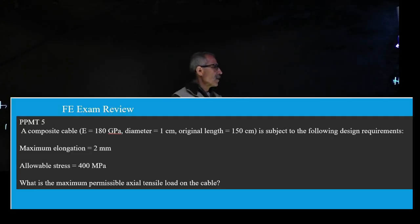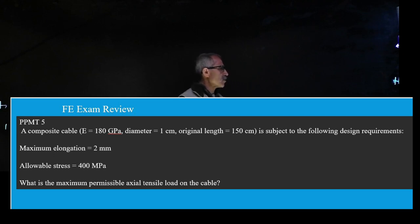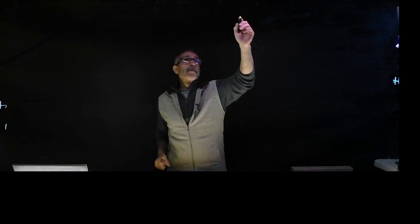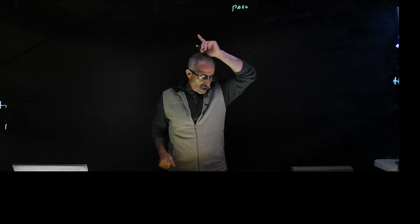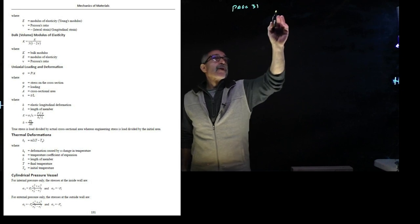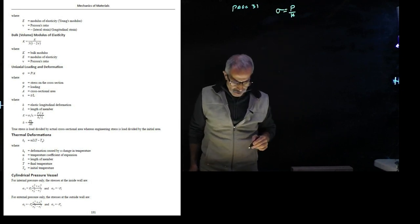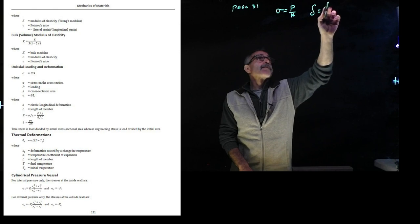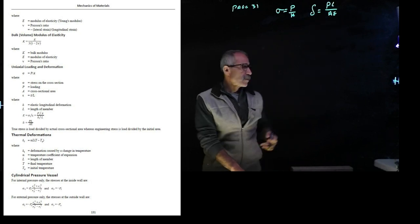The next problem: a composite cable has E equals 180 GPa, diameter 1 cm, original length 150 cm. It's subjected to two design requirements — maximum elongation of 2 mm and allowable stress of 400 MPa. What is the maximum permissible axial tension load? We need to figure out which criterion controls. From the handbook page 31: stress equals P divided by A, and elongation equals PL divided by AE.